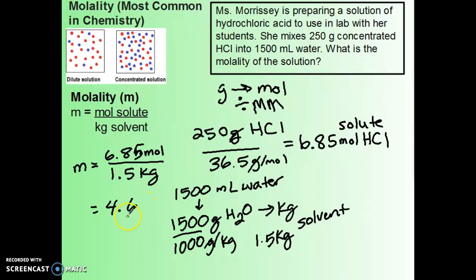So 4.6, and then the symbol we write for the unit is lowercase m, whereas in molarity it was uppercase M. So you can write it like that, but that's the same thing as moles per kilogram. So this is a 4.6 molal solution.